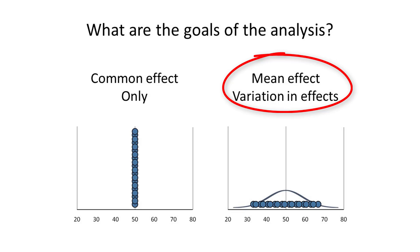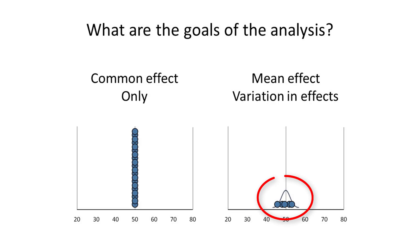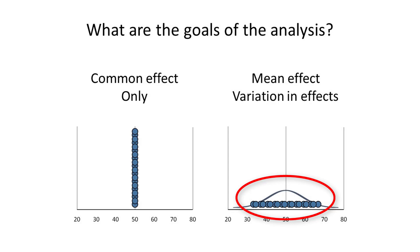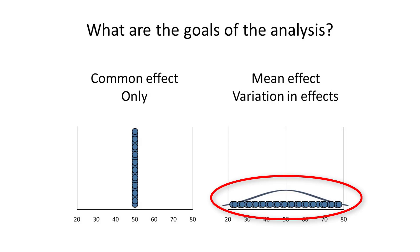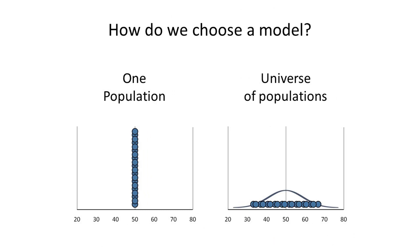By contrast, under the random effects model, the mean score does vary across schools, so we want to know how much it varies. Consider three examples where the mean is 50 but the range differs. If the mean scores fall in the range of 45 to 55, we'd probably conclude that all the schools are functioning well. But if the mean is again 50 and some schools have scores as low as 30 and others as high as 70, we might conclude all schools fall within an acceptable range but some are doing better than others. Finally, if the mean scores range from 20 to 80, we'd probably conclude that some schools need to improve while others are doing extremely well.